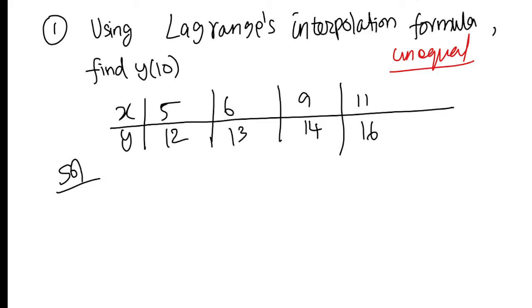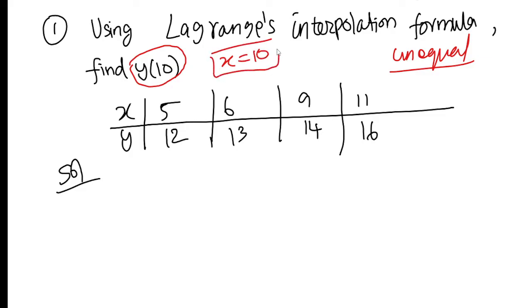In this question, find y(10). If you read the question, there is a number that is the x value. Find y(10), that is y(x) where x equals 10. In Newton's forward, backward, or Lagrange, all the time the problem is to find y — you are given x and asked to find y. So here x equals 10, and this is an unequal interval, so we apply the Lagrange formula.